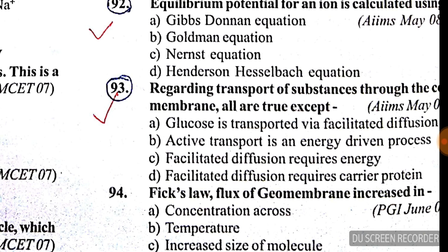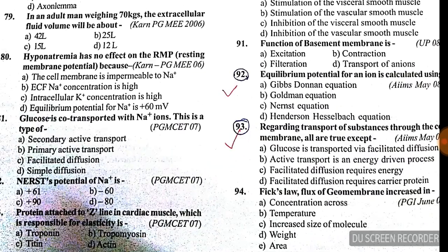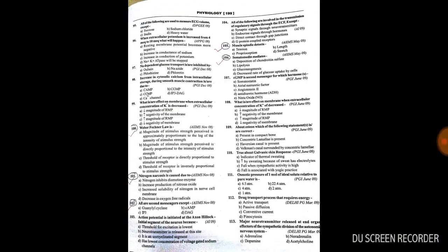Question 93: regarding transport of substances through the cell membrane, all are true except — glucose is transported via facilitated diffusion (true), active transport is an energy-driven process (true), but facilitated diffusion does not require energy. Answer is C — facilitated diffusion does not require energy.